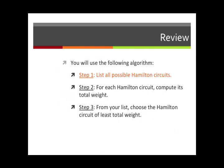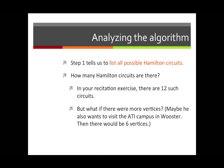You're going to use a three-step algorithm. Step one: list all possible Hamilton circuits. In this lecture, I want to concentrate on thinking about that first step. The first step in the algorithm says you've got to list all the possible Hamilton circuits in your graph. A natural question to ask is: how many are there? How many Hamilton circuits will we have to list if we follow this algorithm?